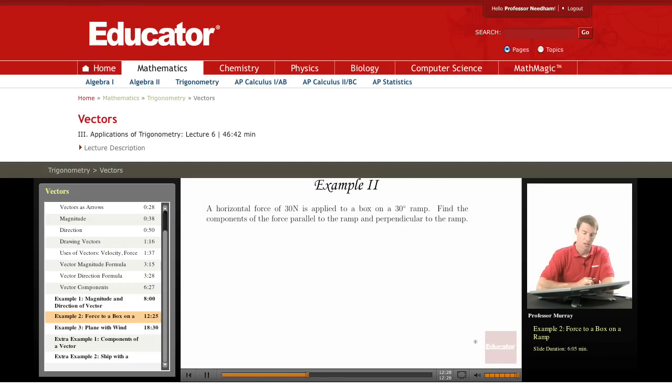Let's look at another example here. A horizontal force of 30 newtons is applied to a box on a 30 degree ramp. We want to find the components of the force parallel to the ramp and perpendicular to the ramp.